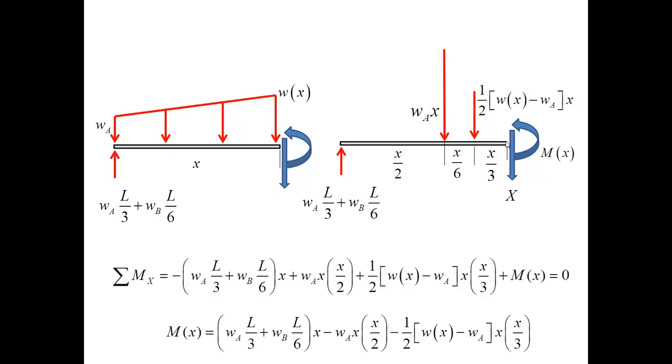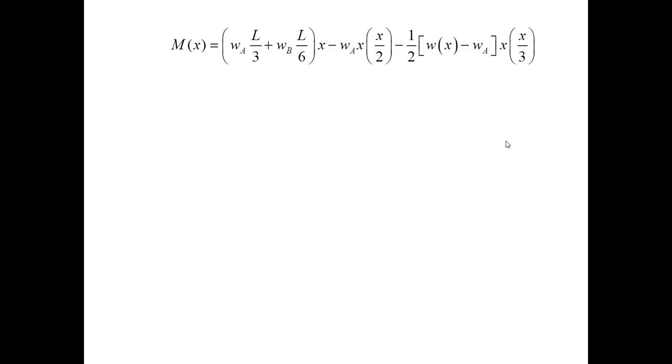However, this expression needs to be further examined, because it contains an unknown function W of X, and we have to find the maximum of M. So, let me rewrite it, and first observe that W of X is a linear function, and this linear function is such that at zero its value is equal to WA, at L its value is equal to WB, and therefore I can use these two conditions as two equations for finding two unknown parameters, alpha and beta. And this gives me the value of the function.